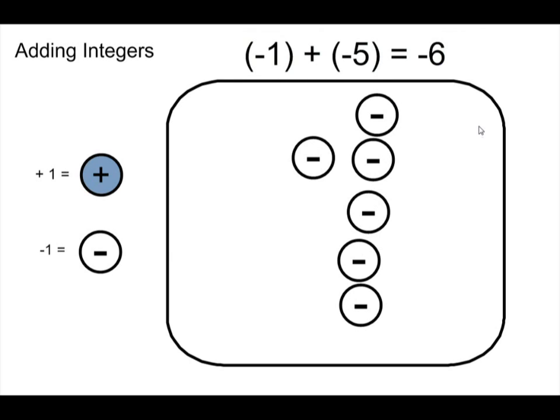My answer, negative one plus negative five equals negative six. And that is how you add integers with counters.